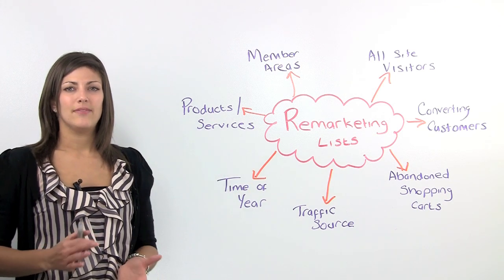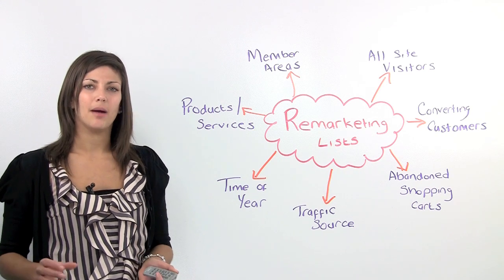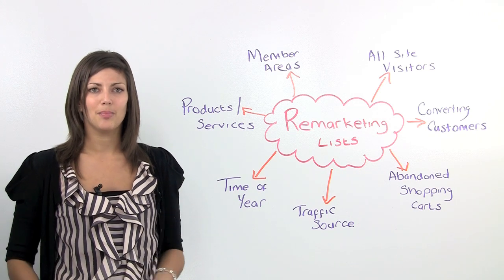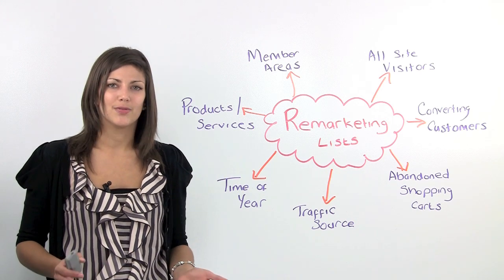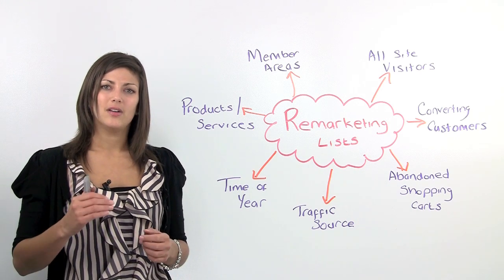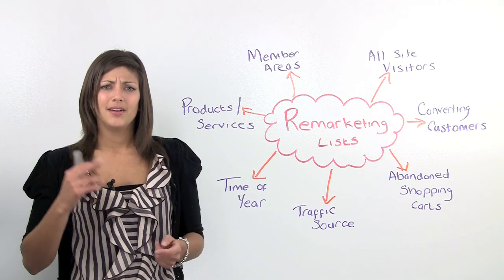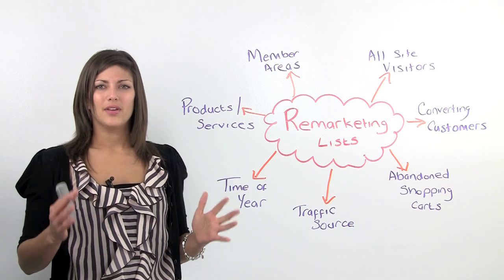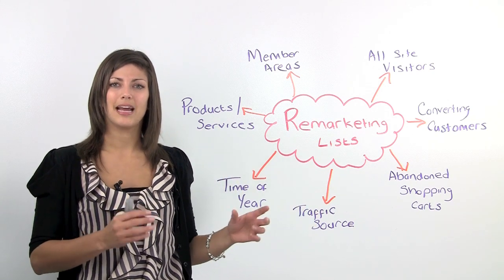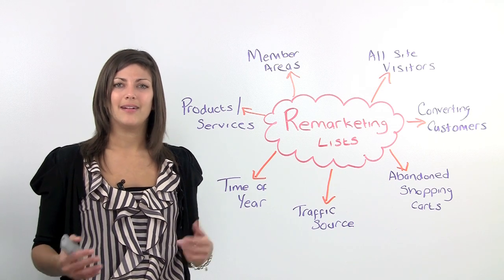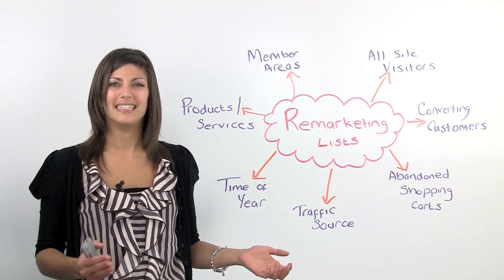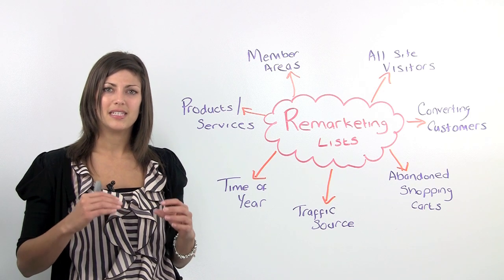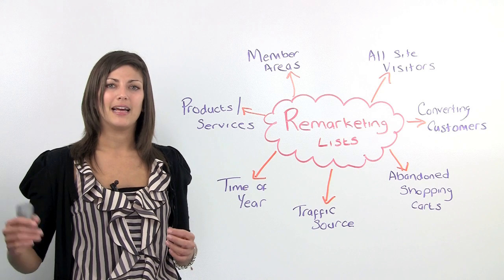Products and services — this is a really clever way that can get a little bit time consuming to set up, especially if you've got lots of products or services. One example that was really great for me was Karen Millen, a dress shop. When I went on their website, I actually looked at three different dresses and left the site. Within a couple of minutes, I'd gone onto a train line website and there was actually an ad that contained the three dresses that I'd already just looked at on Karen Millen. That ad kept following me around, and like my colleague with the mountain bike example, I actually did buy the dress from Karen Millen. You can go down to a real granular level so that you're actually showing them the specific products that they've searched for or looked at on your site.